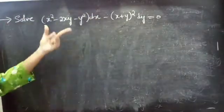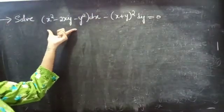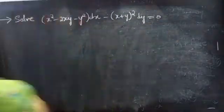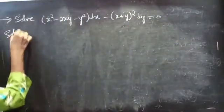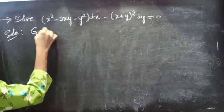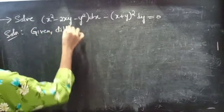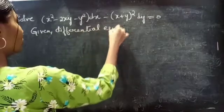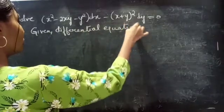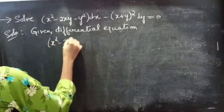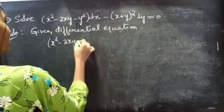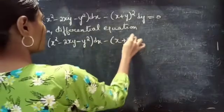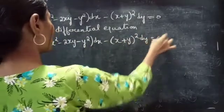Problem: Solve (x squared minus 2xy minus y squared) dx minus (x plus y whole squared) dy equals to 0.